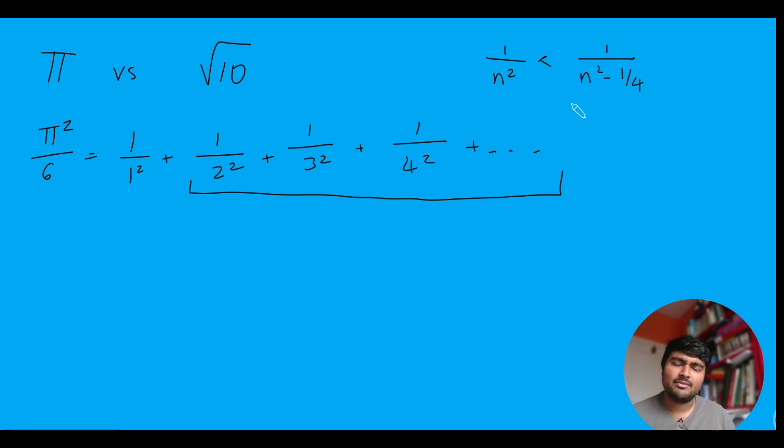And now a quarter is a half squared. So I can think of this as n squared minus a half squared, and then use the difference of two squares. So this is 1 over n minus a half times n plus half, like so.